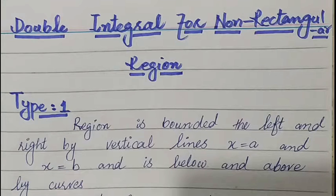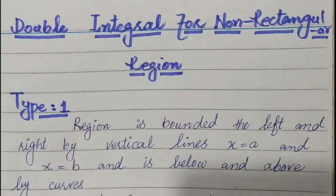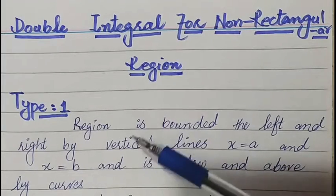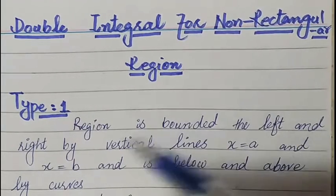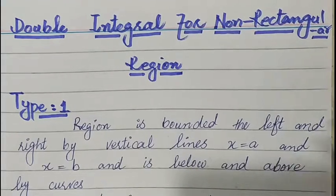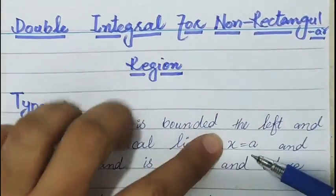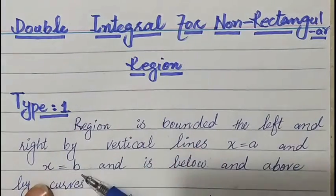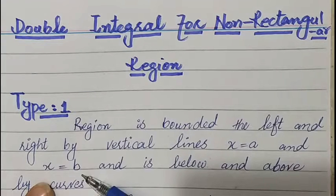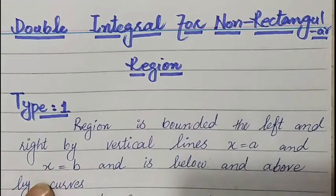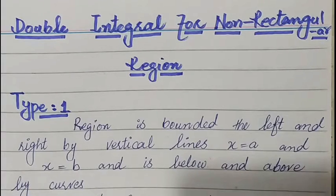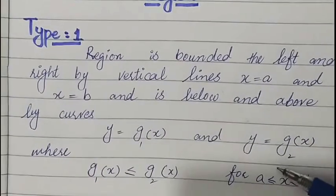Bismillahirrahmanirrahim. Assalamu alaikum students. In today's lecture we will discuss double integrals for non-rectangular regions. There are two types of regions. The first type is when the region is bounded on the left and right by vertical lines x = a and x = b, and bounded below and above by curves y = g1(x) and y = g2(x).